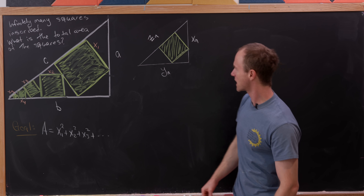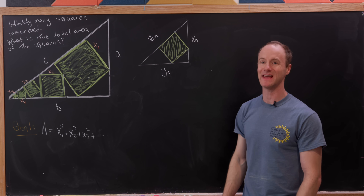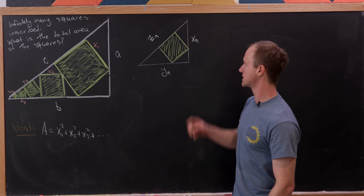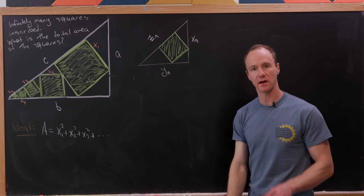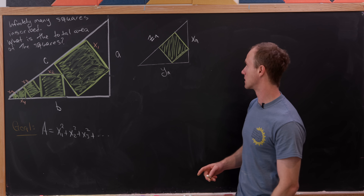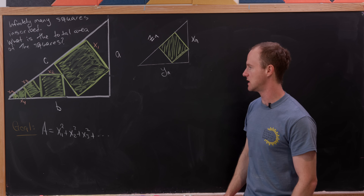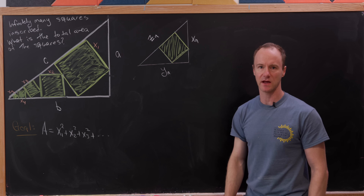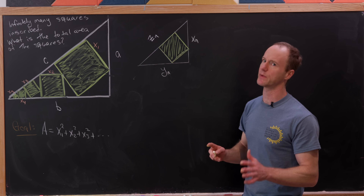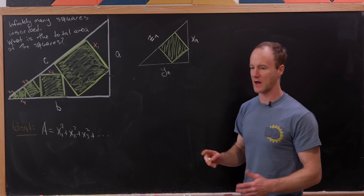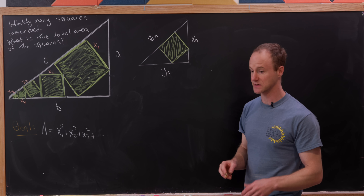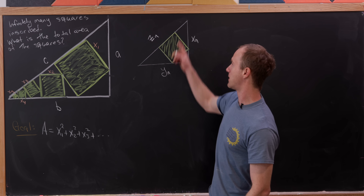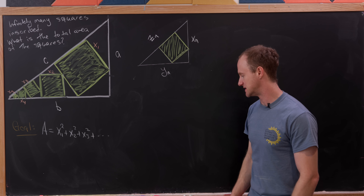Here's the picture of what's going on at the nth step. The shortest side length of the nth triangle is X_n, and I've set the other leg to be Y_n — which is a bit unnerving given how we usually label axes, but it'll be okay — and the hypotenuse is Z_n.